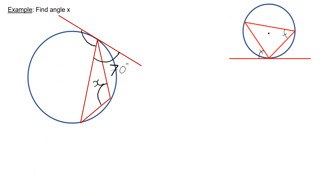Looking at this question, we want to find angle X. You've got your tangent meeting a chord, so this angle here is going to be equal to the angle in the alternate segment, X. It's not the same-segment angle — it's the alternate segment. We know this angle is 70, so angles on a straight line means this angle is 110. Alternate angles in the alternate segment are equal, so X is 110 degrees.